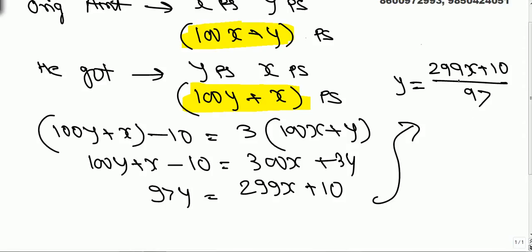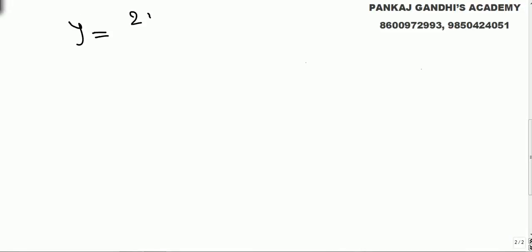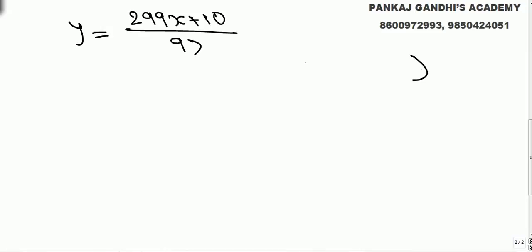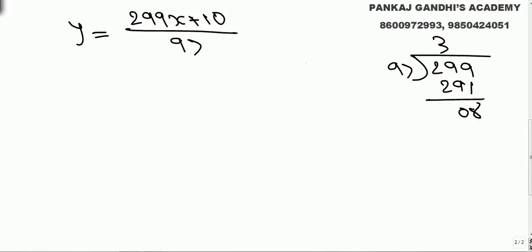Now y and x are paise values, so they cannot be fractional — we need this to be a whole number. So (299x + 10) must be a multiple of 97. We need to find the nearest multiple of 97. Since 291 is a multiple of 97 (97 × 3), that part will always be divisible by 97.